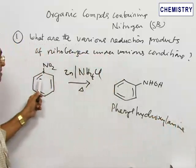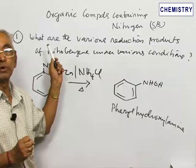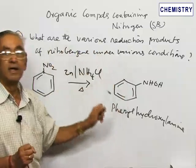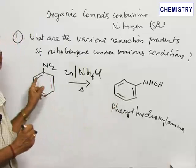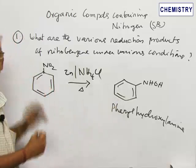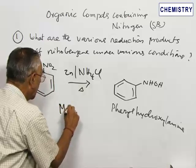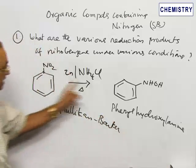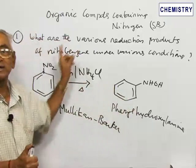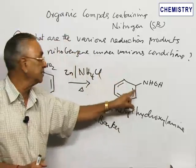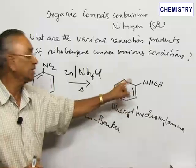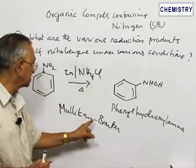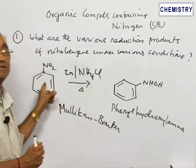To summarize: nitrobenzene is reduced to aniline in acid medium, to hydrazobenzene in alkaline medium, and to phenylhydroxylamine in neutral medium. The neutral-medium reaction is the basis of a test for the nitro group known as Mullikan and Barker's reaction. Phenylhydroxylamine has reducing properties and on reaction with ammoniacal silver nitrate (Tollens' reagent) gives a black precipitate — this is the basis of the Mullikan and Barker's test for the nitro group.